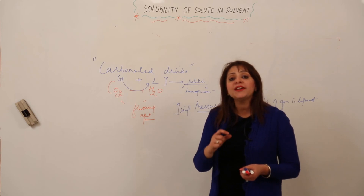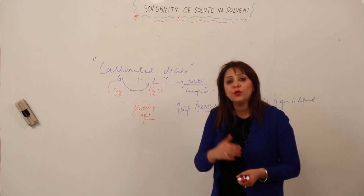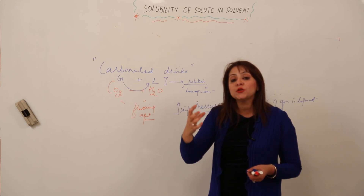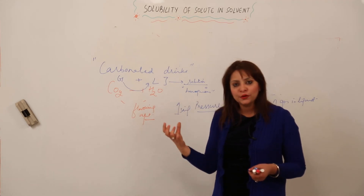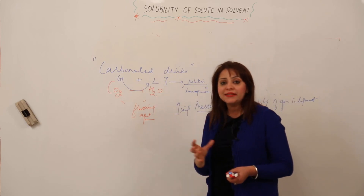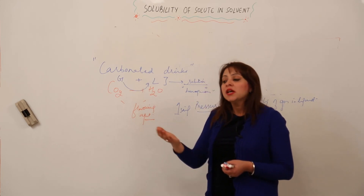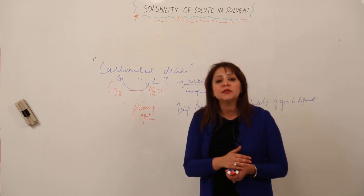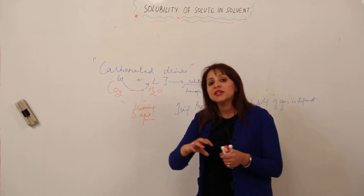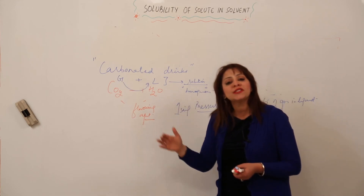More you increase the pressure, more is the solubility of gas in liquid — that is why carbonated drinks are sealed under pressure with a cap. When you open the cap, the pressure decreases, so the solubility of CO₂ in water decreases, and CO₂ escapes from the water in the form of fizz. That is why whenever you open a cold drink you see gas coming out. By increasing pressure, the solubility of gas in liquid increases.